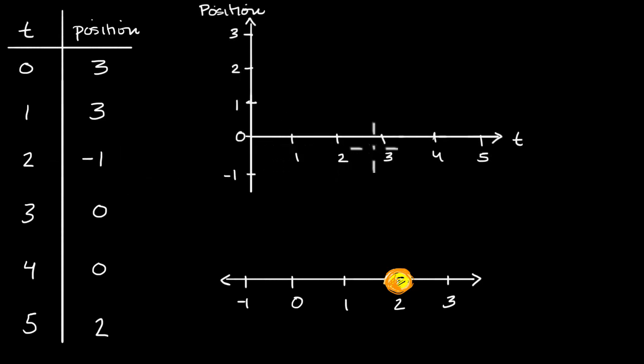Typically time is on your horizontal axis, and position is on your vertical axis. So let's think about this a little bit. So at time equals zero, our position is at three. So at time zero, our position is at three.